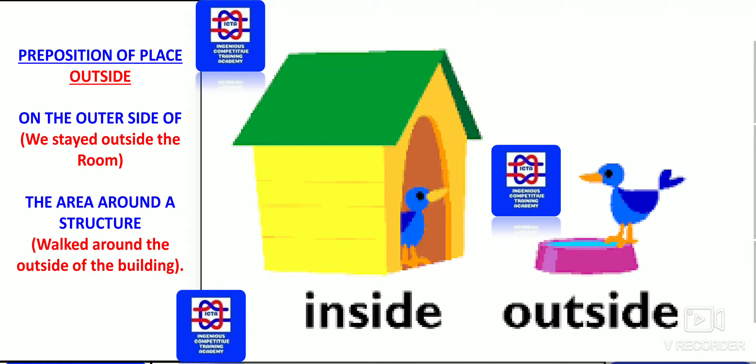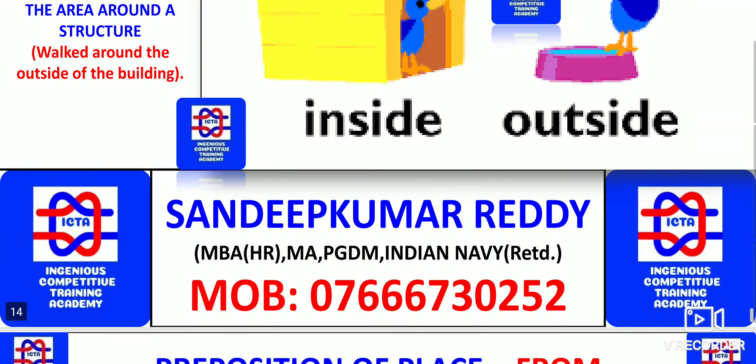Preposition of place — that is 'outside.' On the outer side of: we stayed outside the room. As you can see the dog is just outside the house — so we stayed outside the room means on the outer side of the room. The area around the structure: walked around the outside of the building — whatever area is around the structure. It is very important to remember how exactly 'outside' has been used.